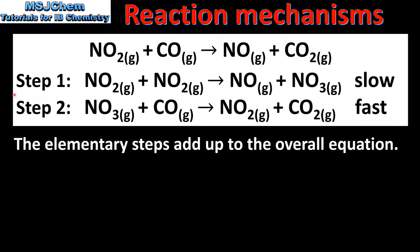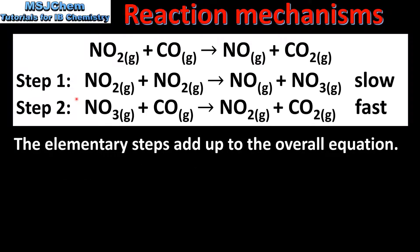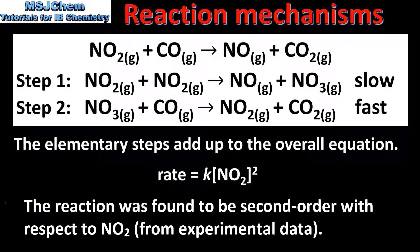Next we look at the molecularity of each step. In both elementary steps we have two reactant particles, therefore they are both bimolecular. Finally, we will see if the rate expression determined from the rate-determining step agrees with the experimentally determined rate expression. The rate expression determined from step 1 shows the reaction is second order with respect to nitrogen dioxide. The reaction was also found to be second order with respect to nitrogen dioxide from experimental data. So the rate expression determined from the slow step agrees with the experimentally determined rate expression. Once again this reaction mechanism satisfies the three criteria, and therefore is a possible reaction mechanism for the reaction.